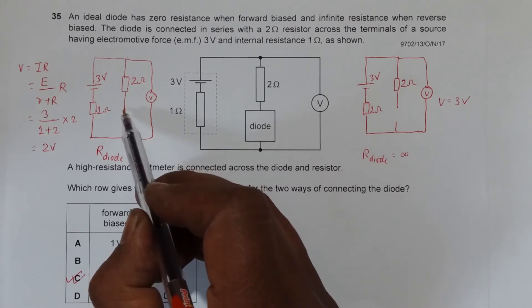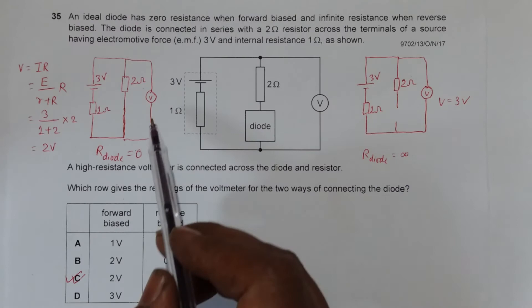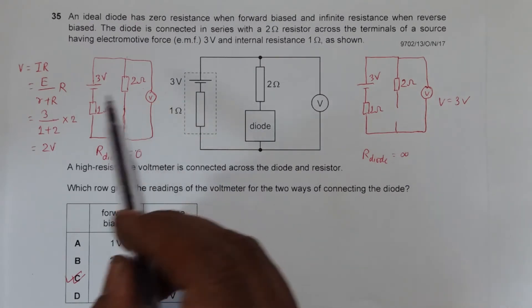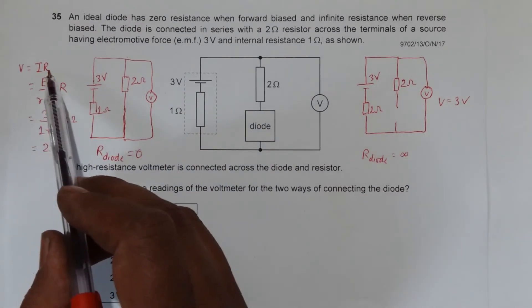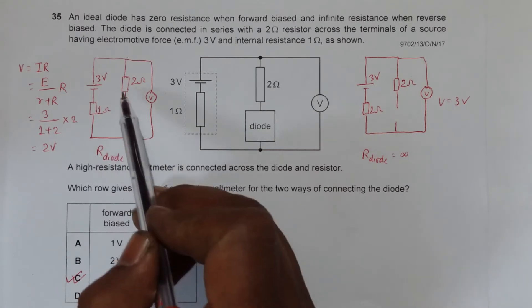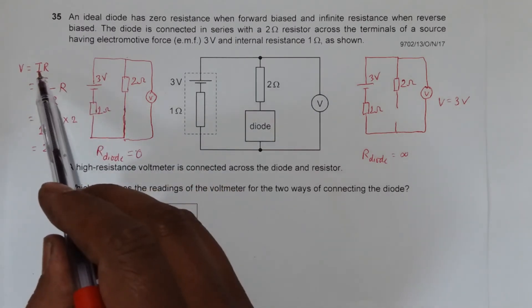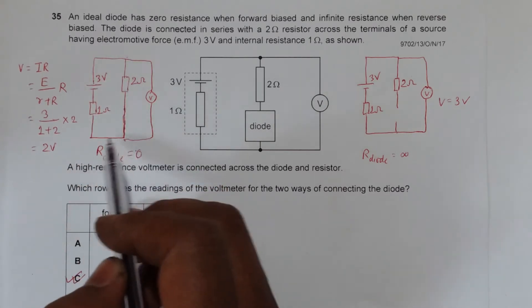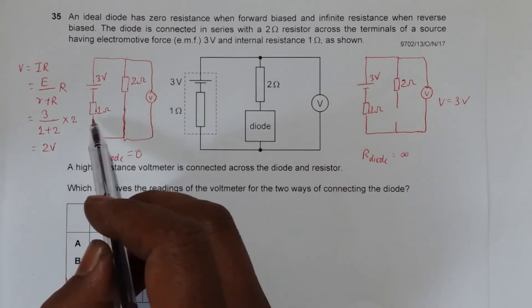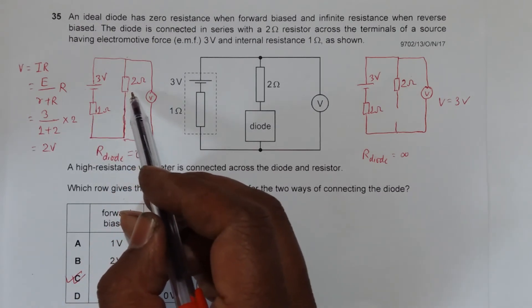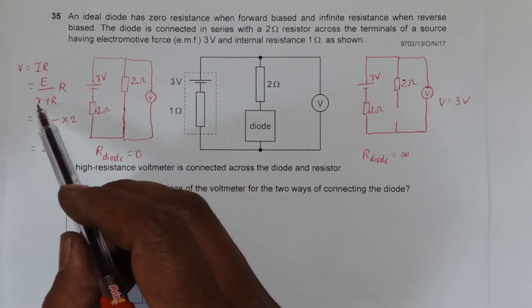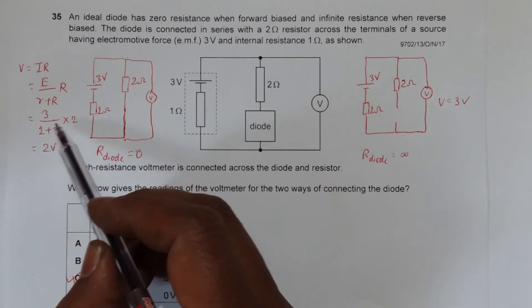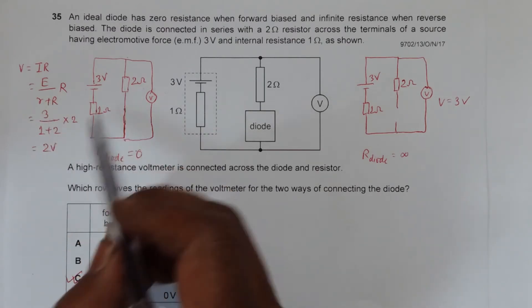Now at that time, the reading here will be current into resistance, current into this resistance. And the value of current is given by total EMF by the total resistance here. So this internal resistance and the outer resistance are in series, that's why it is R plus R. And then it is 3 by 1 plus 2, which is 3 by 3 times 2, equals 2 volts.